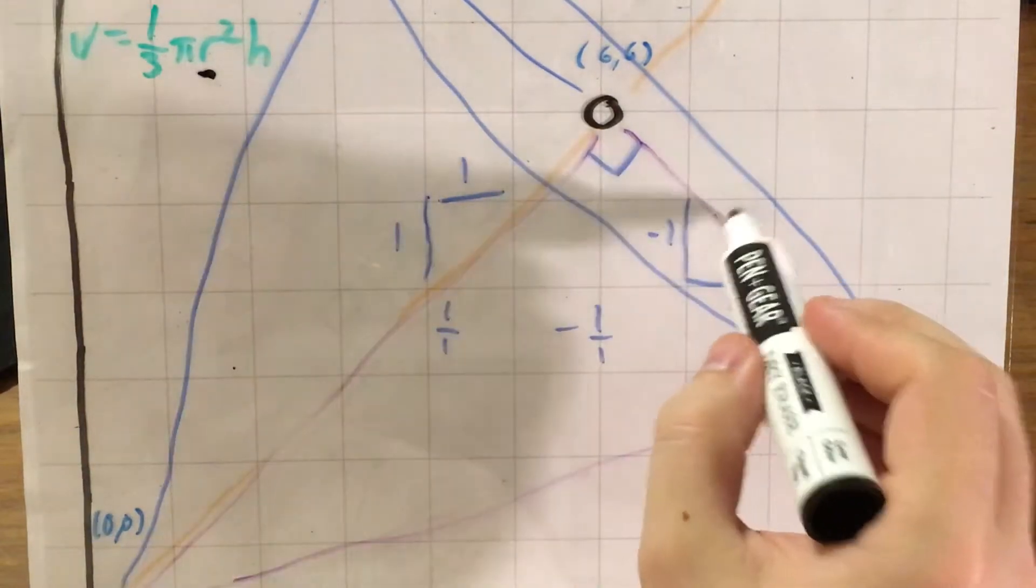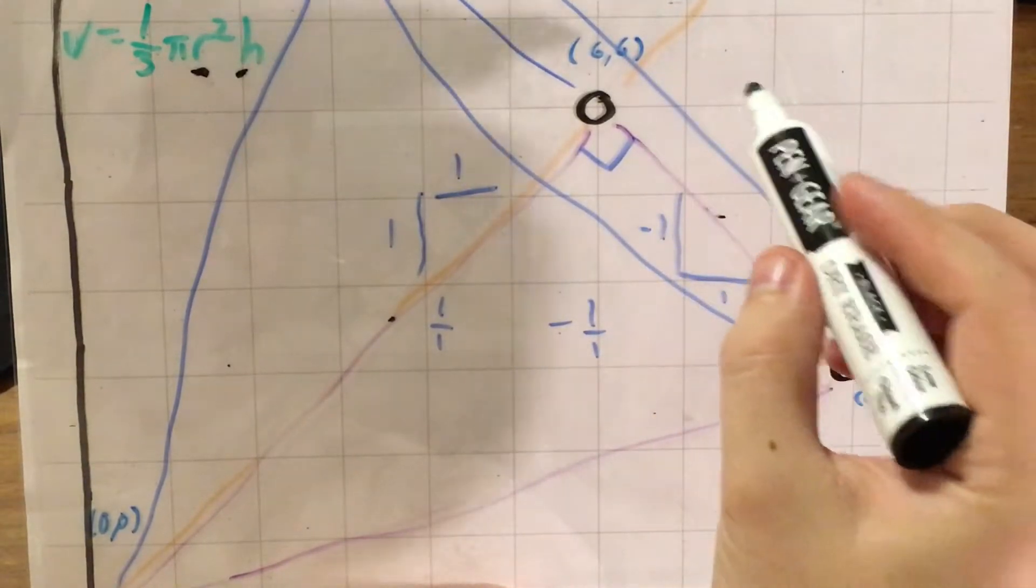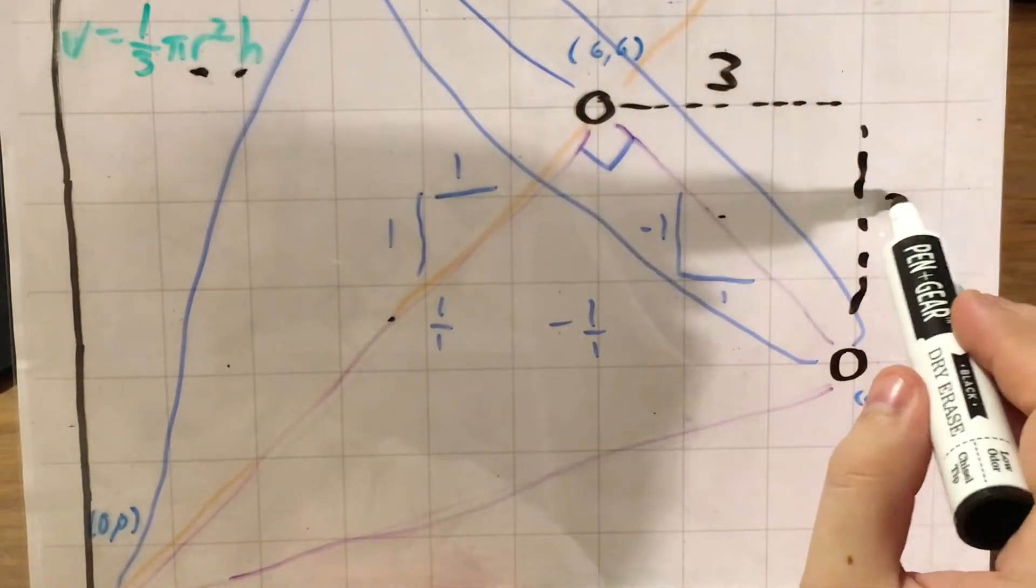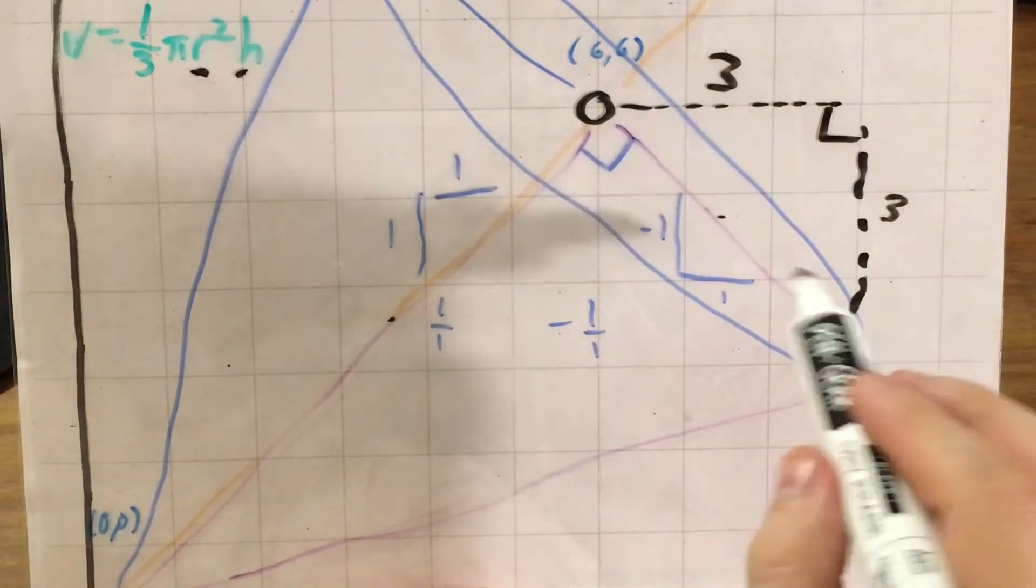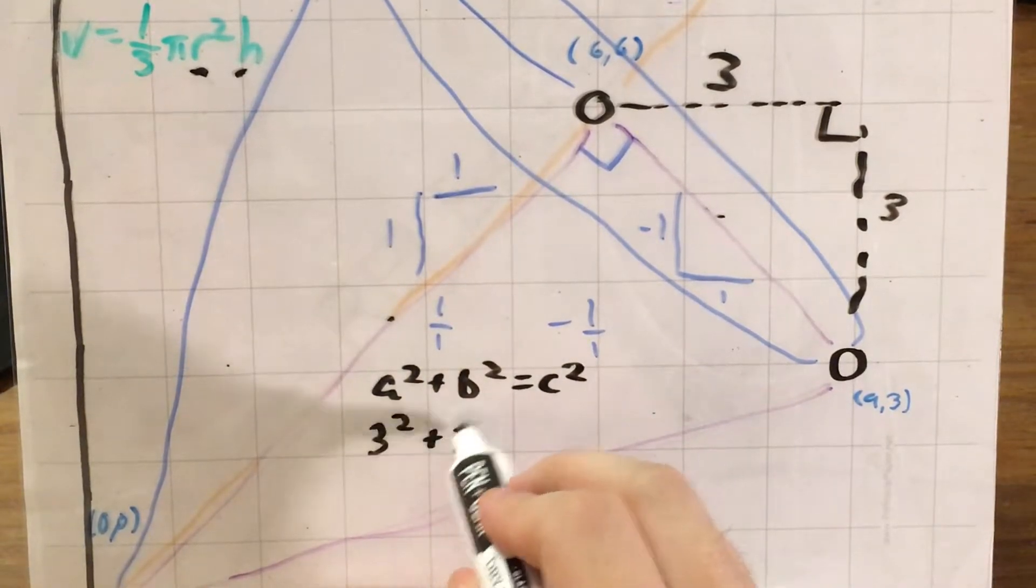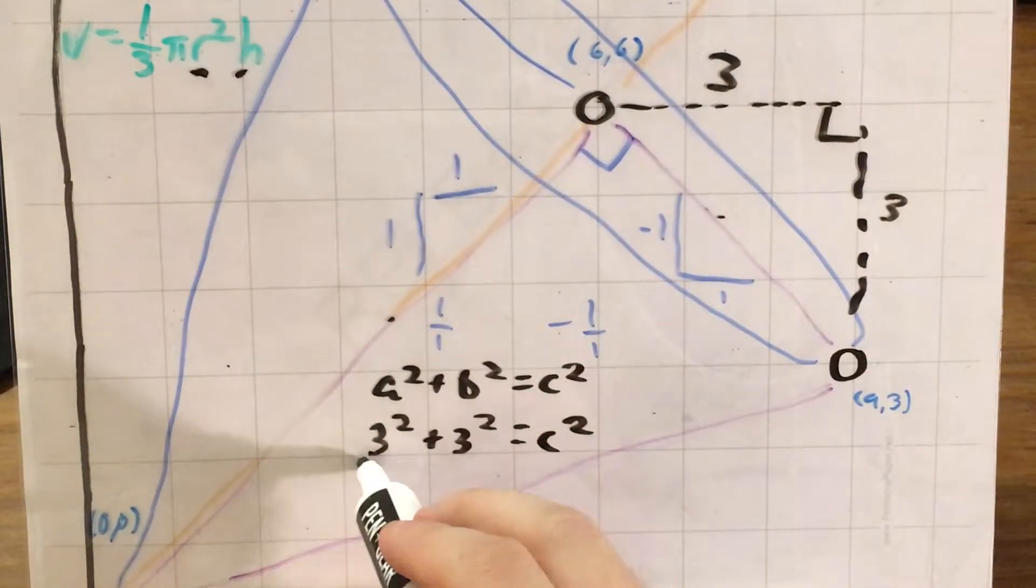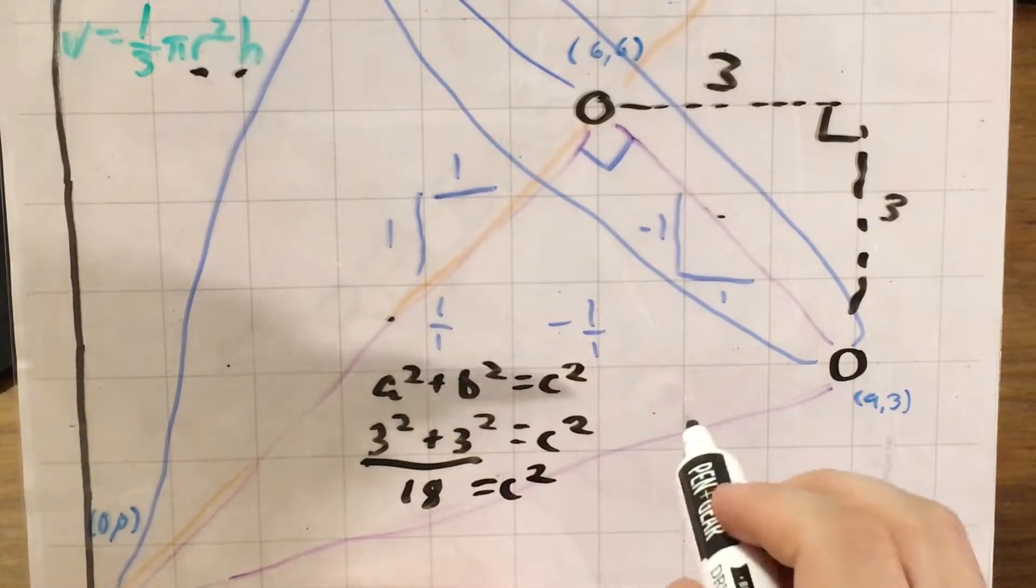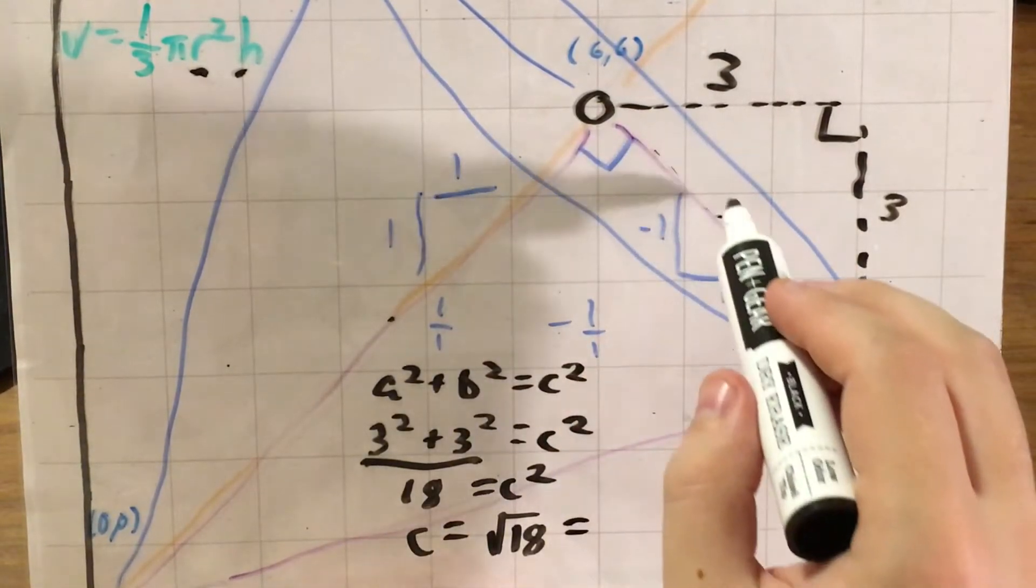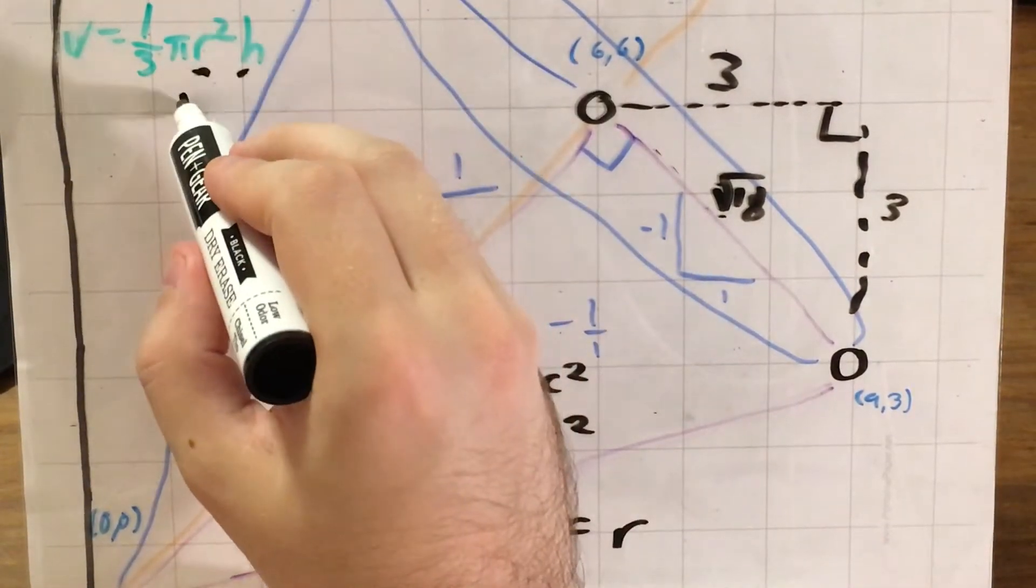But anyway, let's go ahead and actually figure out our radius, this line, and our height, this line. For our radius, I'm going to use coordinate distance and treat this like it's a right triangle, where we have three units across, three units down. These make a right angle. And I'm going to use the Pythagorean theorem, a² + b² = c², or 3² + 3² = c² to figure out this line and treating it as a hypotenuse. I get 18. Since 18 = c², c equals the square root of 18. And remember, this is also like the radius of our cone. So now I have a value for radius, the square root of 18.